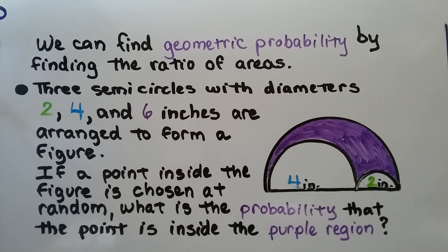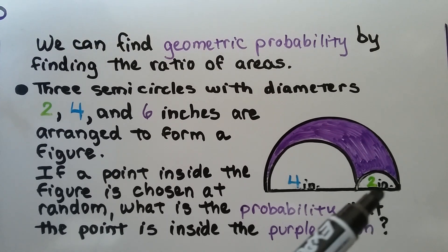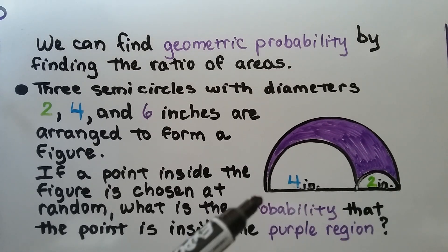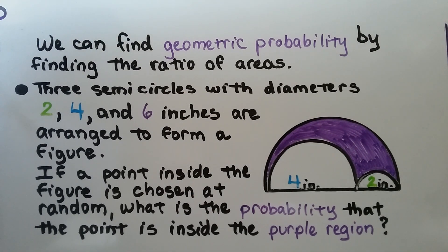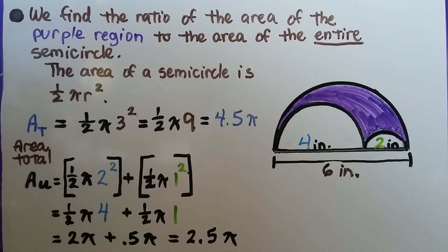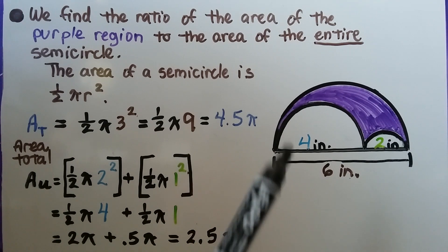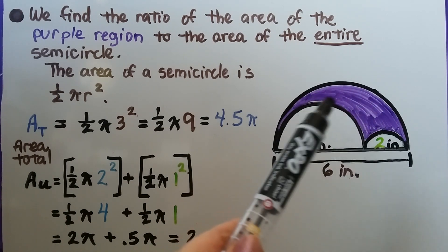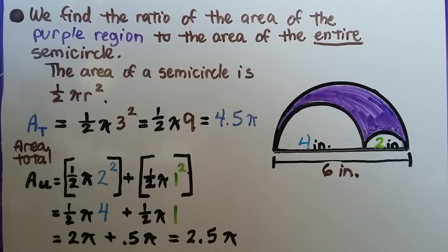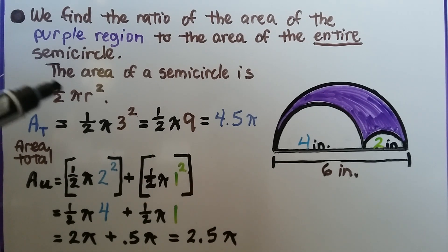We can find geometric probability by finding the ratio of areas. We have three semicircles with diameters of 2, 4, and 6 — that would be the entire length — arranged to form a figure. If a point inside the figure is chosen at random, what is the probability that the point is inside the purple region? We find the ratio of the area of the purple region to the area of the entire semicircle.